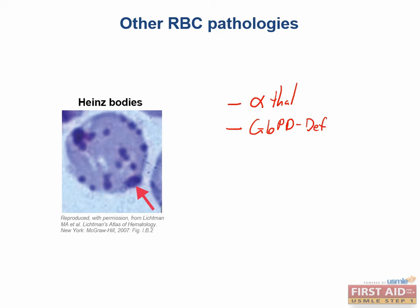Do you remember the bite cells we spoke of earlier? Interestingly, Heinz bodies are actually very closely linked to these cells. The characteristic bite cell actually has this shape because when these cells pass through the spleen, RBCs with Heinz bodies are bitten by splenic macrophages. The macrophage tears off a piece of the cell that includes the Heinz body, so it looks as if these cells have had a bite taken out of them.